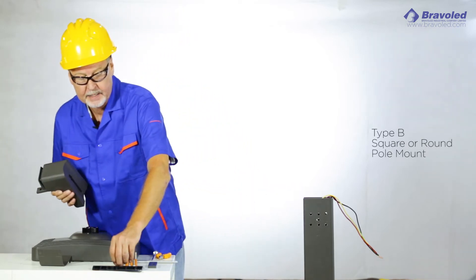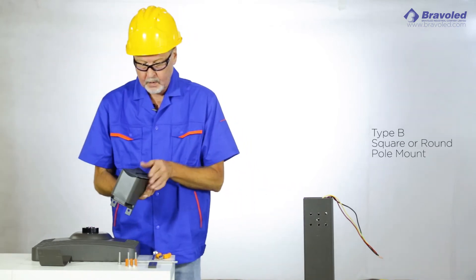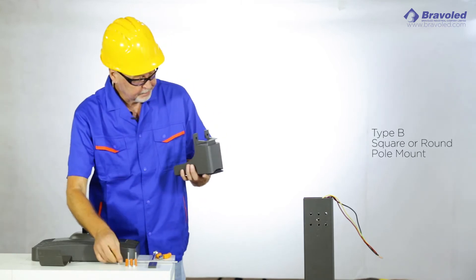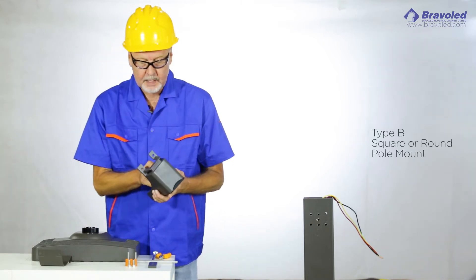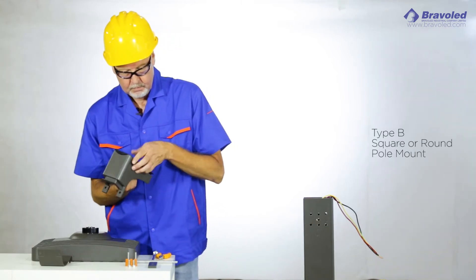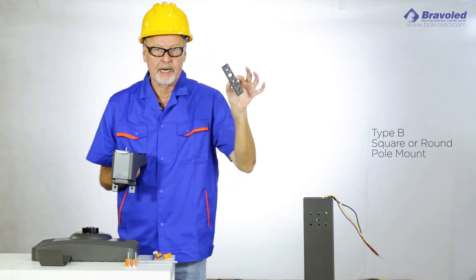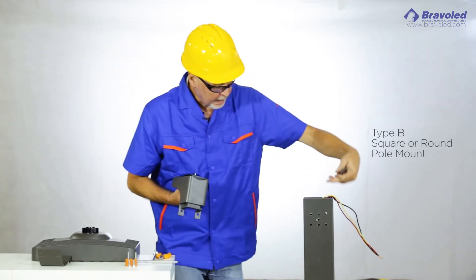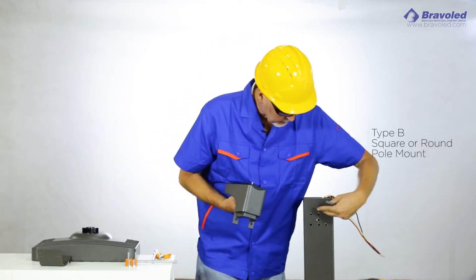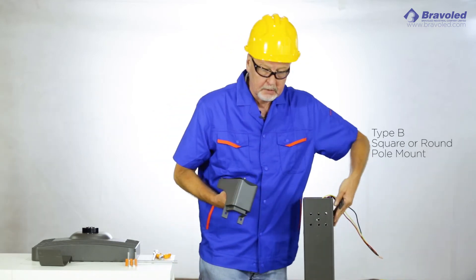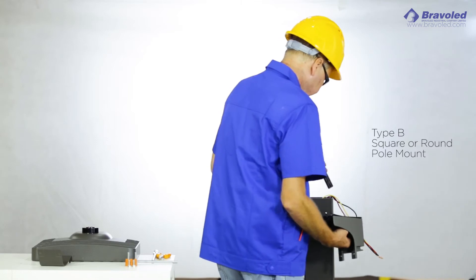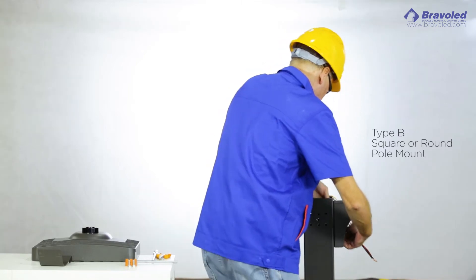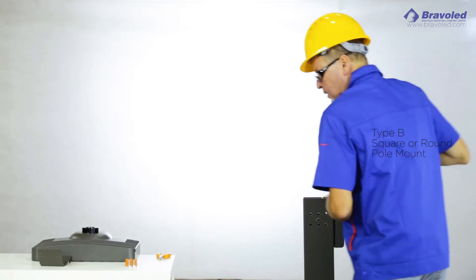We start with our mounting bracket. Add the gasket. Hex screw. We have our bracket with tapped holes. Obviously your holes need to be pre-drilled just like this one, but we're going to mount on this side. Tighten our holes.